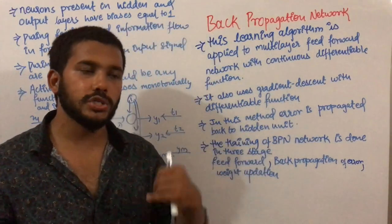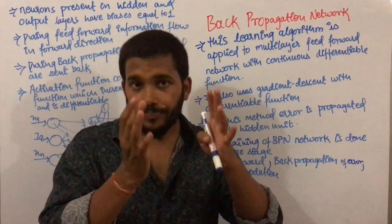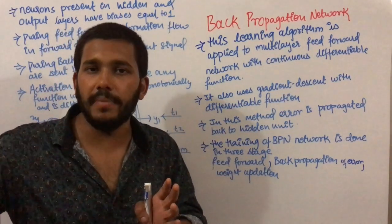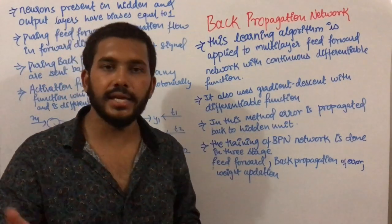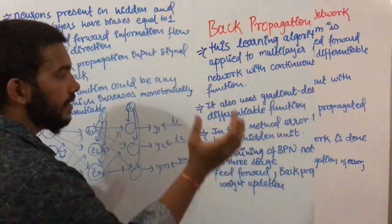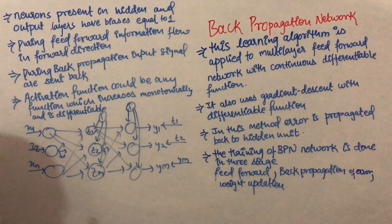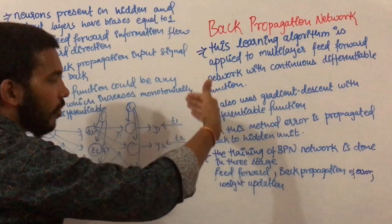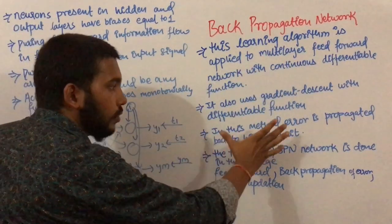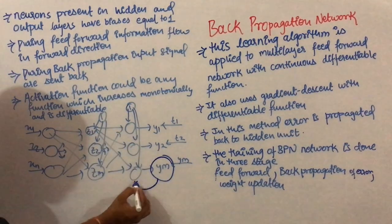The perceptron model was based on the Hebbian assumption; Adaline and Madaline were based on gradient descent. Gradient descent means we try to minimize the error — error is not made exactly zero but is minimized as much as possible. In back propagation network, error is propagated back to the hidden unit, which is different from other networks where error was propagated only in the output unit.